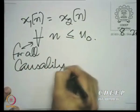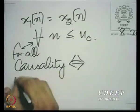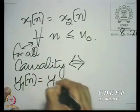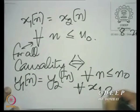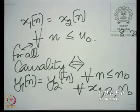Causality means that y1[n] is also equal to y2[n] for all n less than or equal to n0, and for all such x1, x2, and n0. That means: take any pair of inputs which are identical up to some n equal to n0, apply them to the system in two different experiments, and study the output. The output is identical up to that point n0 if and only if the system is causal, for any choice of inputs x1, x2, and any point n0.